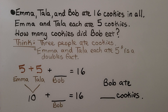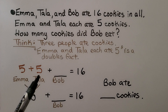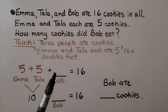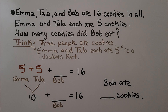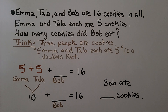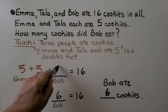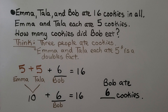Emma, Tala, and Bob ate 16 cookies in all. Emma and Tala each ate five cookies — how many cookies did Bob eat? Emma ate five and Tala ate five, that's a doubles fact: five plus five equals 10. Together they ate 16, so 10 plus whatever Bob ate equals 16. Five plus five plus six is equal to 16, so Bob ate six cookies.